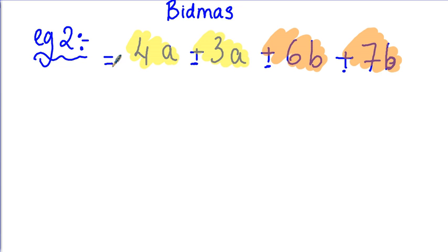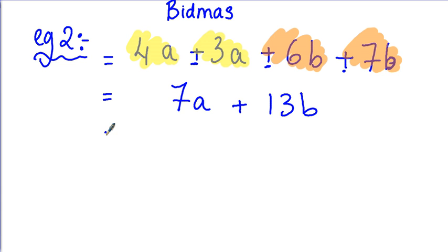Let's collect the like terms. 4A plus 3A gives me 7A, and 6B plus 7B gives me 13B. Finally, I need to check whether I can add 7A and 13B together. Just like apples and mice, I cannot add them because they're not the same thing — 7 apples and 13 bananas are different. So this will be my final answer: 7A plus 13B.